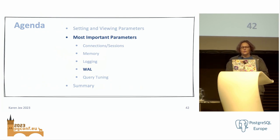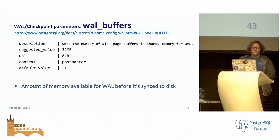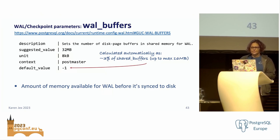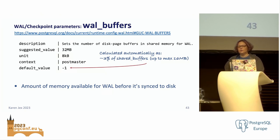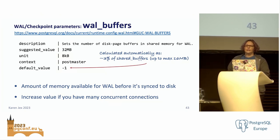Next, WAL — your write-ahead log. Tuning your WAL and checkpoints can have a significant impact on performance. wal_buffers controls how much memory is available for WAL before it's synced to disk. The default value of -1 means the size is calculated automatically at about 3% of shared_buffers, up to a maximum of one WAL segment size which is 16MB by default. The contents of WAL buffers are also written out at every commit, so very large values are unlikely to provide significant benefit. But if you have a large number of concurrent connections, increasing wal_buffers — for example to 32MB — can improve write performance.